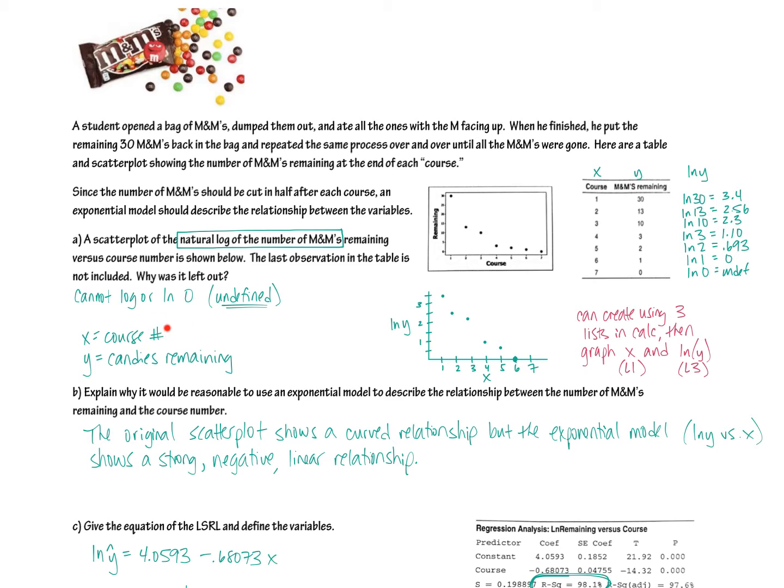Remember to define all your variables. X is the course number. Y is the candies remaining. Why is it reasonable to use an exponential model? Well, because the original scatter plot was curved. Therefore, the exponential model, this is a vocab word. You should have this in your reading guide. That means you do the natural log of Y versus X. This is called, by definition, an exponential model when you natural log the Y value and use the regular X value. This will be a multiple choice question somewhere. Pop quiz in your reading guide. What is it when you natural log the Y and the X? Brief pause for dramatic effect. When you natural log the Y and the X, it's called a power model. Those are the two vocab words you need to have written down.